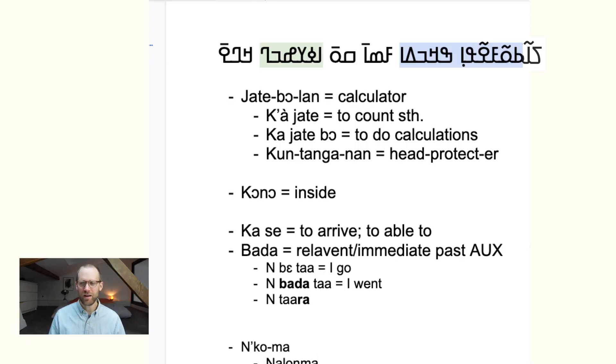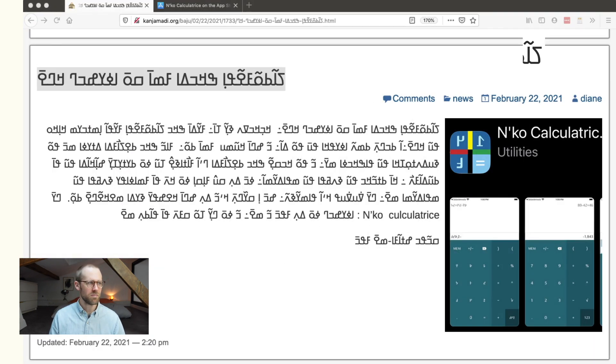So if we put our whole thing together then, we have jatibolan unko man barrasé iPhone kono, so an N'ko calculator has arrived onto the iPhone. And so let's go back to the page that I had pulled up.